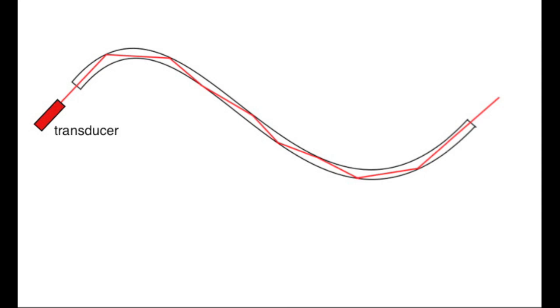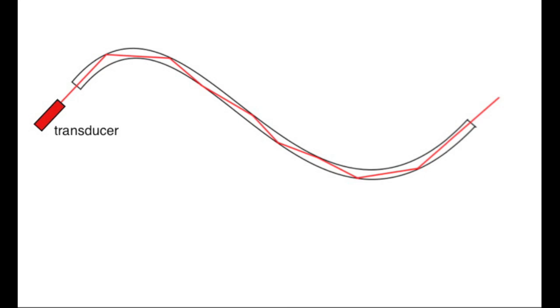The key means of transmitting telephone calls, internet information and video streaming is by optical fibre. A transducer such as a light emitting diode can be used to change electrical pulses into light pulses. These digital signals in binary code can then be transmitted for very long distances through the optical fibres.